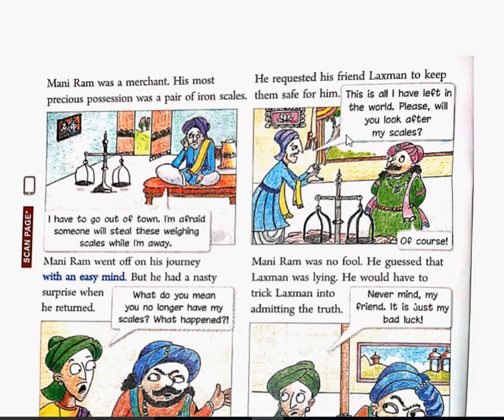Jo bhi title hoti hai, children, the title justifies the lesson. Matlab, title ko parhke hi readers ko pata chal jayega ki story mein kya hone wala hai, theme kya hai. Yahan you have understood ki story is connected with the mice and iron. This story also gives us a moral value - that we should not be greedy and cause pain to others.